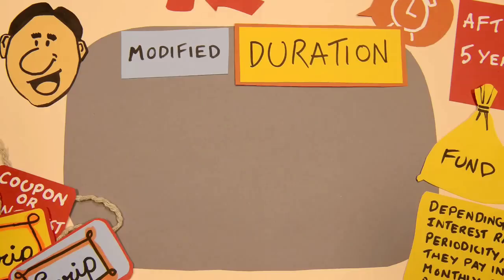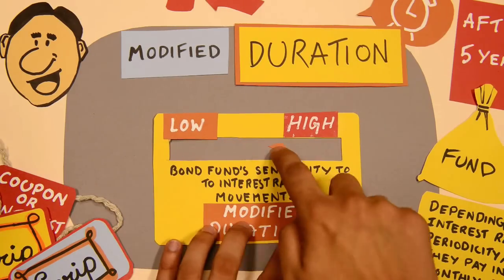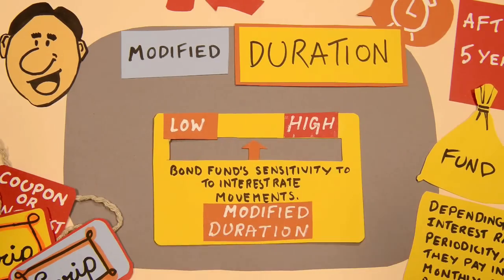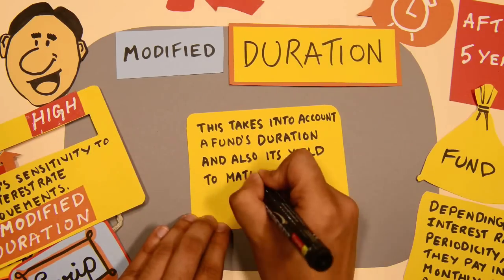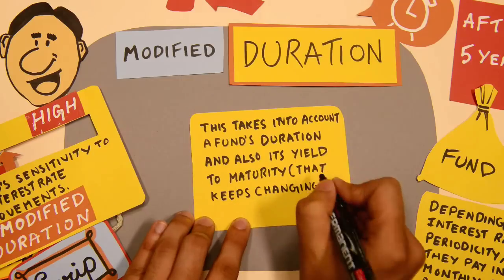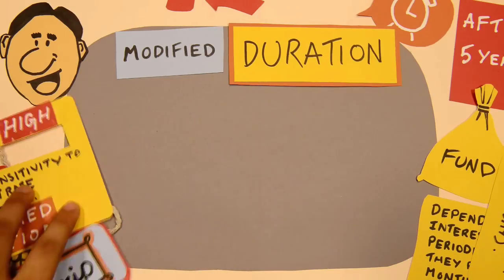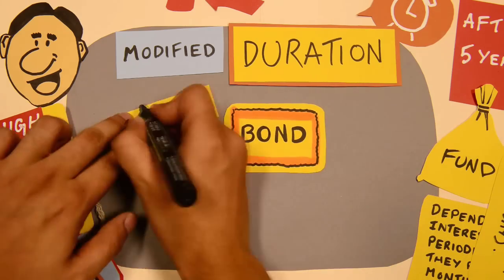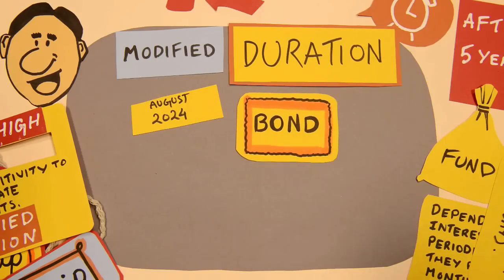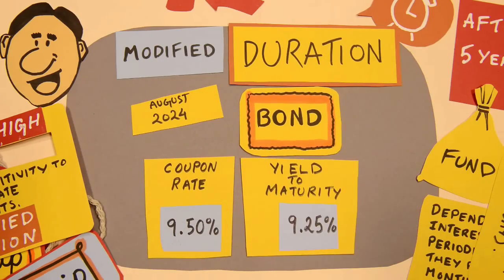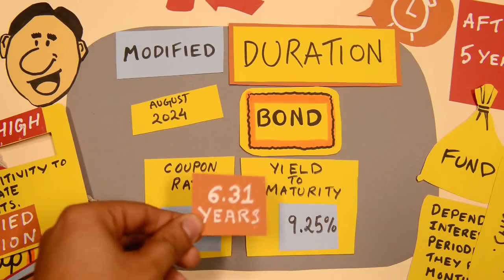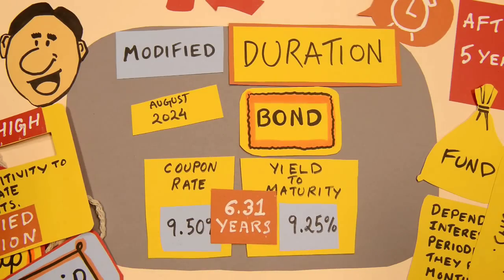Modified duration is a better tool that measures a bond fund's sensitivity to interest rate movements. It takes into account a fund's duration and also its yield to maturity, which changes every day. For example, a 10-year bond issued today matures in August 2024, carries a coupon rate of 9.50%, and a yield to maturity corresponding to its market price of 9.25%. Back-of-the-envelope calculations show that its modified duration comes up to 6.31 years.